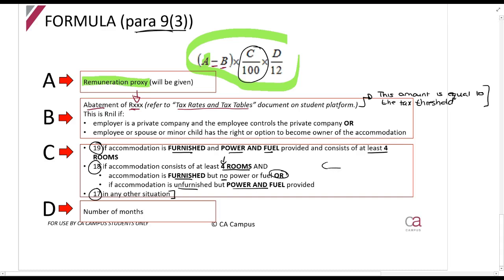D is the number of months. Now, what I want you to see, which is interesting, is that the value of the property has no effect.